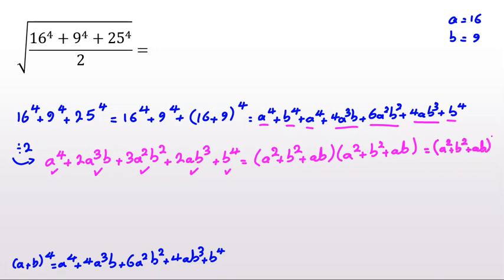Now if we take a square root of this number, it will be a squared plus b squared plus ab. Now a is 16, b is 9. 16 squared plus 9 squared plus 16 times 9.